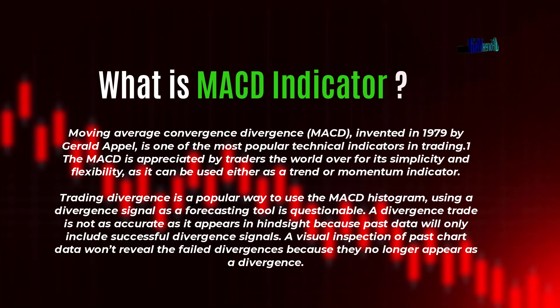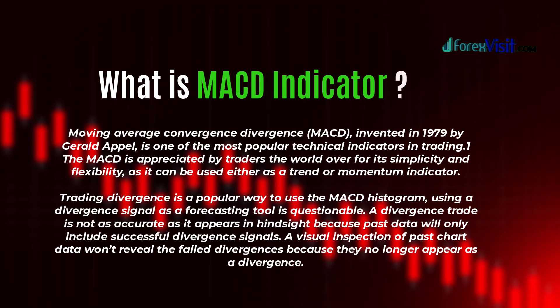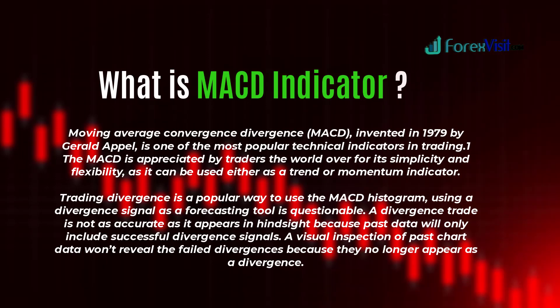Past data will only include successful divergence signals. A visual inspection of past chart data won't reveal the failed divergences because they no longer appear as a divergence.